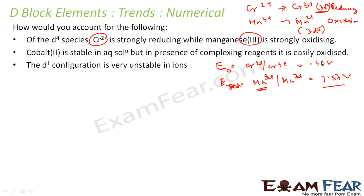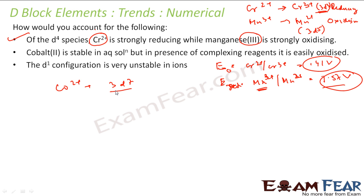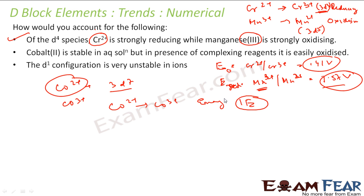Cobalt is stable as Co²⁺ in aqueous solution, but in the presence of complexing agents it is easily oxidized to Co³⁺. Co²⁺ has configuration 3d⁷ and requires energy equivalent to the third ionization energy to be oxidized. However, in the presence of a complexing agent, the energy released by crystal field stabilization of the Co³⁺ complex compensates for this third ionization energy.